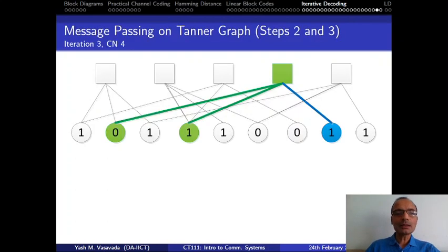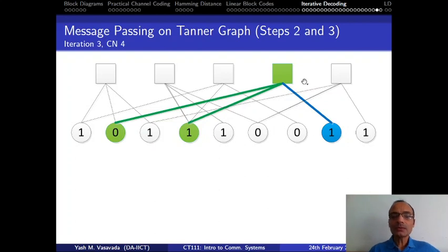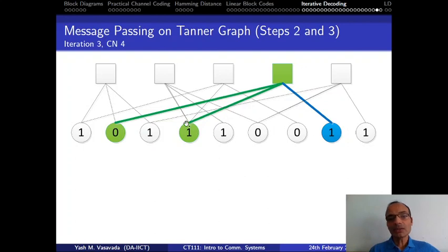We went over iterative decoding on the Tanner graph of a linear block code. The point to notice is that the decoder — the amount of calculations it will have to do for each of the check nodes, and also for each of the variable nodes — depends on the degree of that particular node.